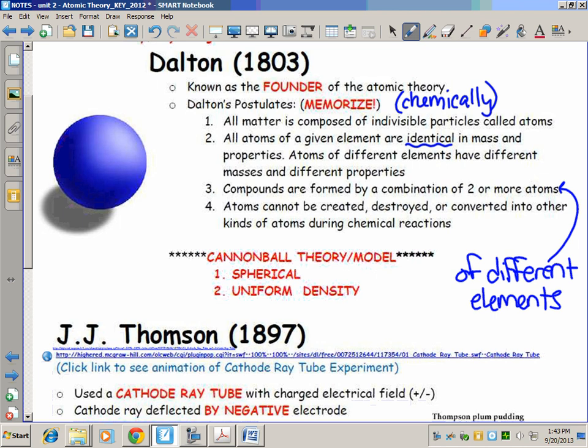Two atoms of oxygen combined chemically give us an oxygen molecule—that's not a compound, it's a diatomic molecule. Two atoms of oxygen reacting with carbon give us CO2. Now we have atoms of different elements, that's a compound.